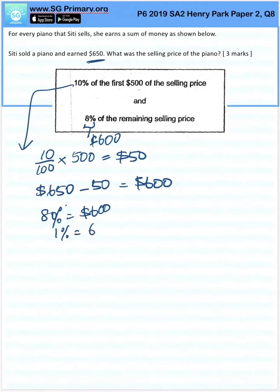1% is $600 divided by 8. 100% is $600 divided by 8 times 100, which is $7500.